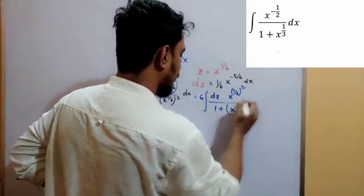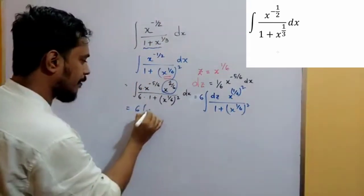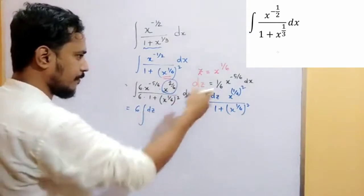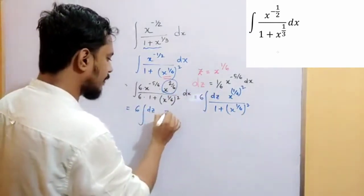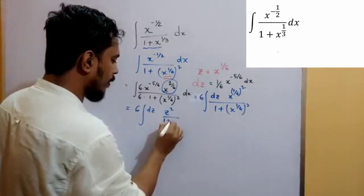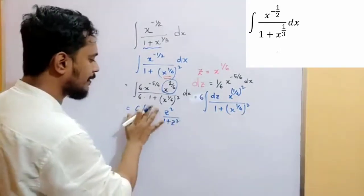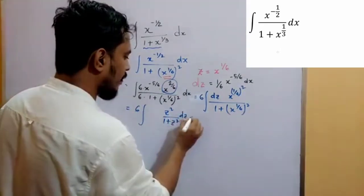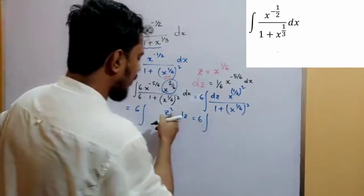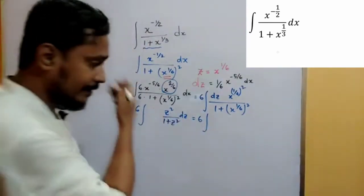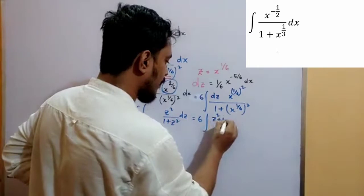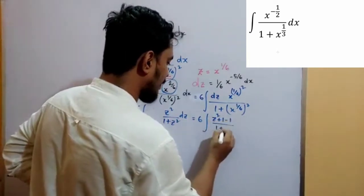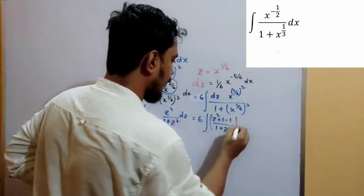so simply dz z square by 1 plus z square write down the 6 on the side. Now we can break that part as z square plus 1 minus 1 by 1 plus z square dz.